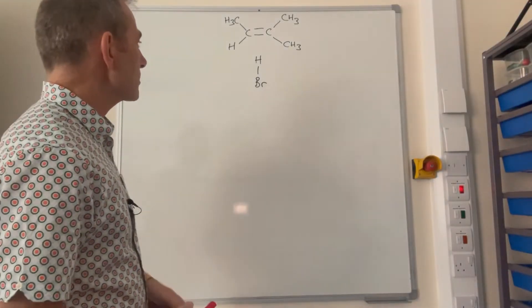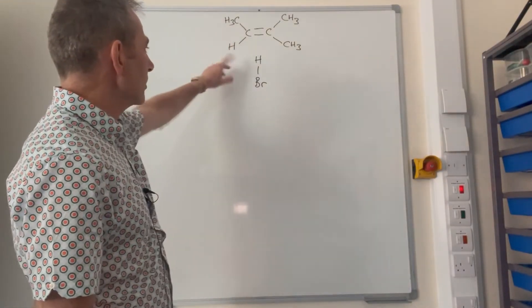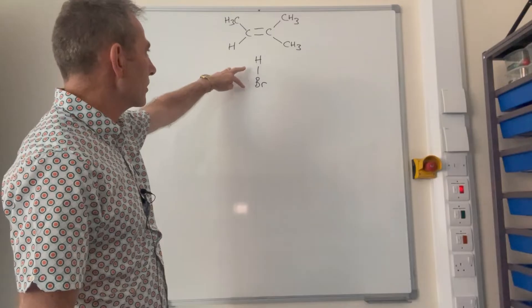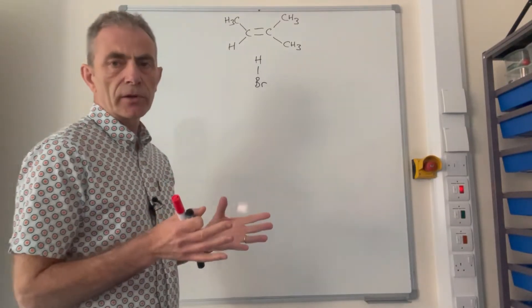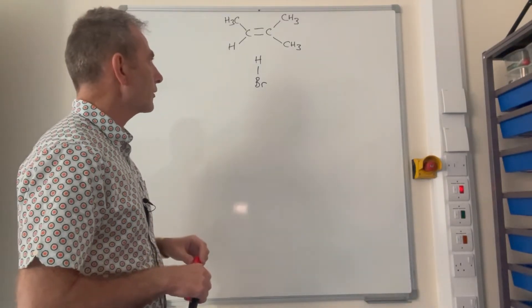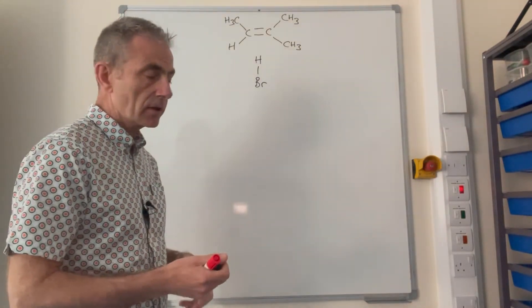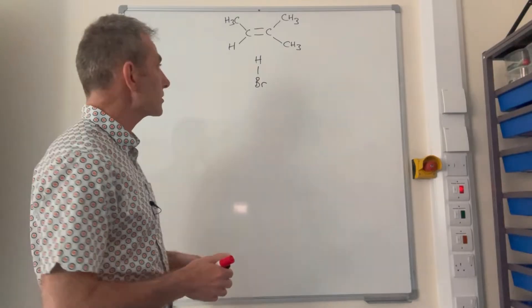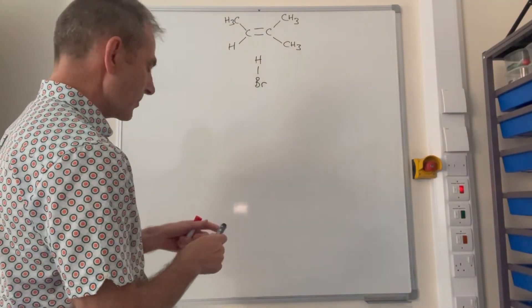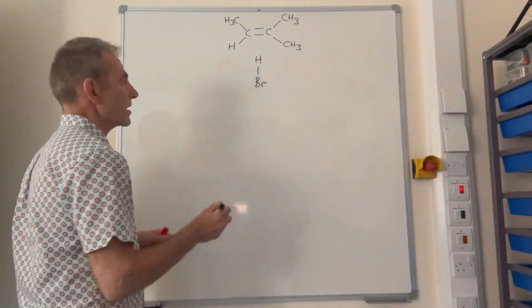Okay, so we'll make a start. So I've drawn a compound down the board with the HBr molecule. So I'm going to do both products. The question only asks for one of them, but I can use both of the products to explain the last part of the question, which one would be the major product. Okay, so the first part of the mechanism starts the same for either product.